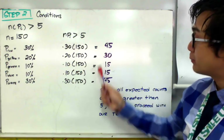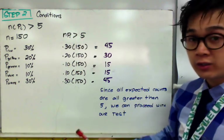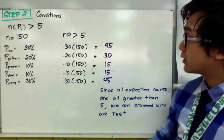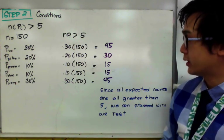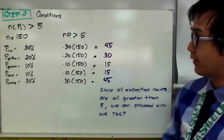Now since all our expected count, also known as the expected value, is greater than 5, we can now proceed to our test statistic without any precaution. So this is our expected value.